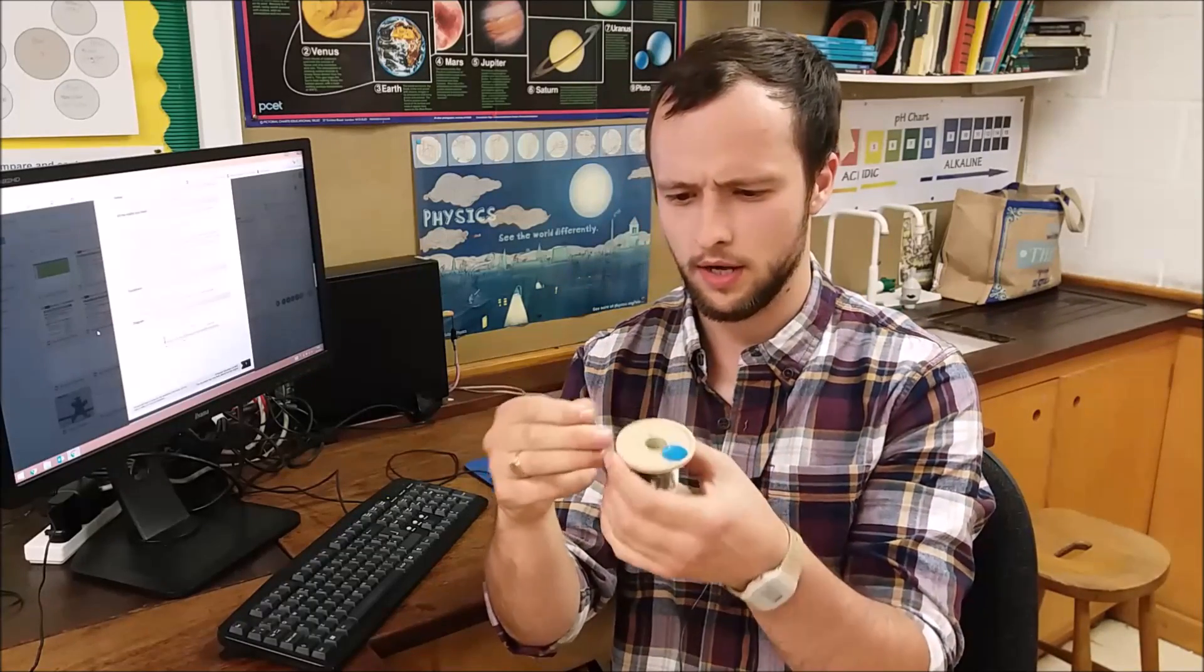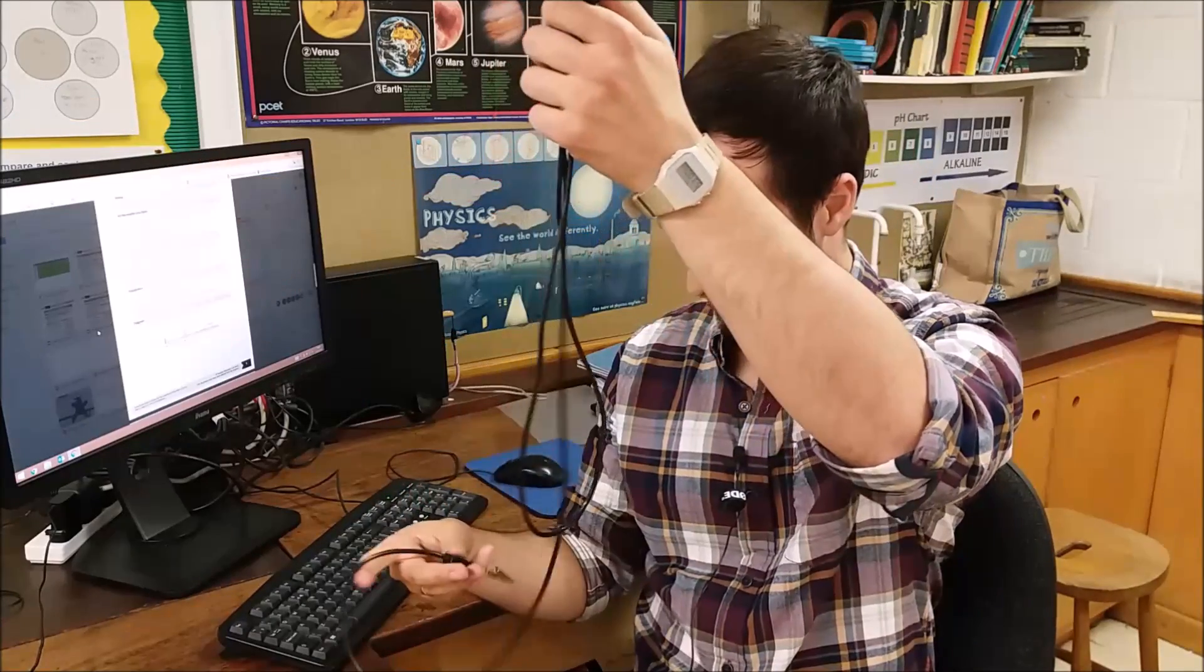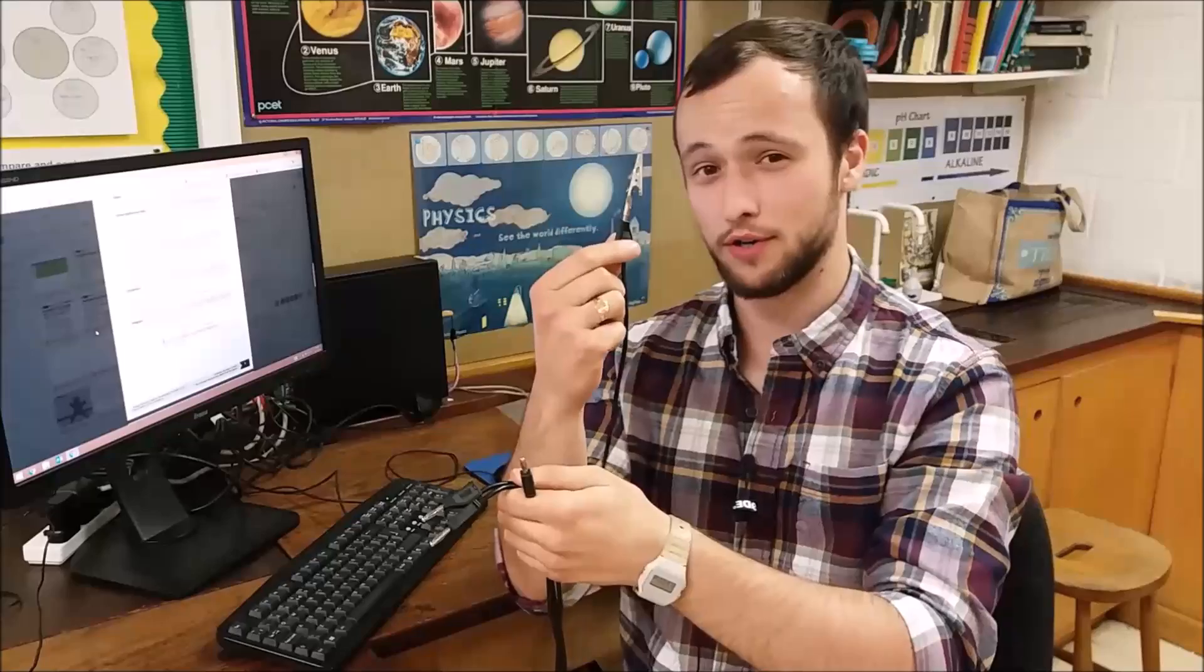You will need 1.05 metres of Constantin wire, or a whole reel of it, a metre ruler, two leads, one with a crocodile clip on the end.